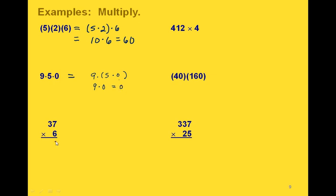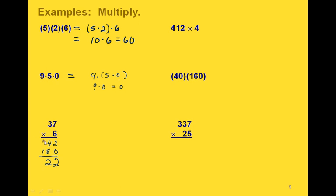In this one we're taking 37 times 6. We take 6 times 7 and then 6 times 30. 7 times 6 is 42, and 30 times 6 gives us 180. We add these two columns to get 222.